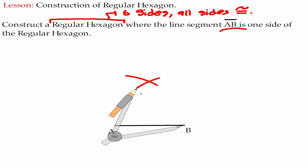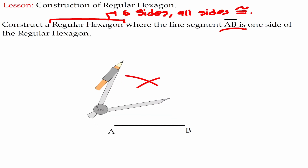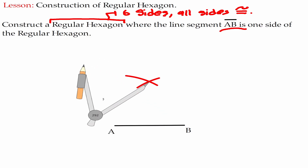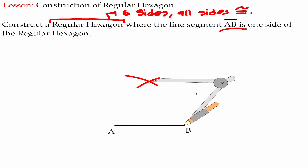Notice that this is going to be an intersection. Now that we have that intersection, let me move my metal leg to the intersection and find the distance to B. Now that we have that distance, let's create a circle. Notice that the radius of the circle is going to be the distance from the intersection to B.